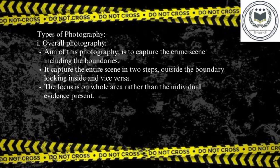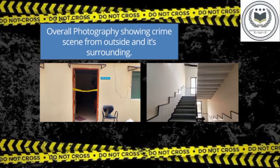There are three types of photography. The first is overall photography. As the name suggests, it includes capturing the crime scene from an overall view, including its boundaries and surroundings. It includes capturing photographs from outside to inside and from inside to outside. In overall photography, the focus is not on a single or individual piece of evidence — instead, the focus is on the whole crime scene.